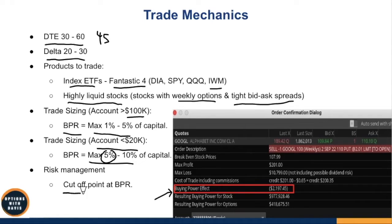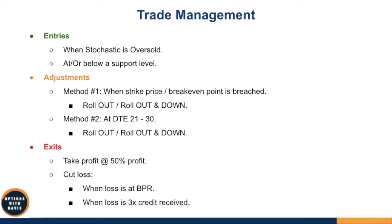Cut the position when loss reaches the buying power reduction — you don't want one trade to wipe out your whole account. For entries, just look at two things: stochastics showing oversold conditions, and price at or below a support level. I've already created a dedicated video specifically on entries which you can check out.